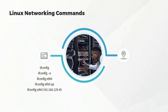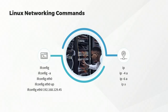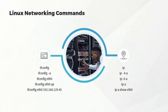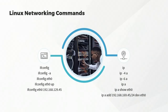The ip command set is more prevalent on modern Linux distributions. For example, ip -4 a shows IPv4 addressing, ip -6 a shows IPv6 addressing, and ip a shows all IP addressing for all interfaces. You can also type ip a show eth0 to view a specific interface. To manually add an IP address for the current session, use ip a add with the address and subnet mask in CIDR notation, then dev and the interface name such as eth0.